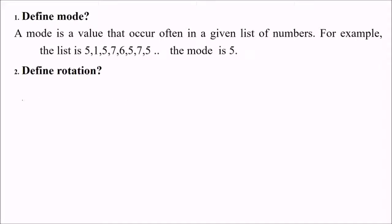It comes in statistics. A mode is a value that occurs often in a given list of numbers. For example, if this is a list, you can see that 5 is coming 1, 2, 3, 4 times, while 7 is coming 2 times. The maximum time is 5, the frequency of 5 is highest. So the mode of this list is 5.